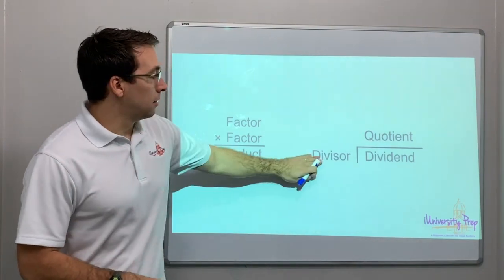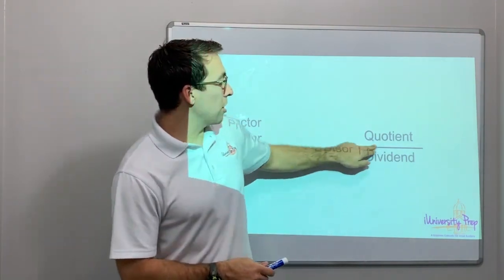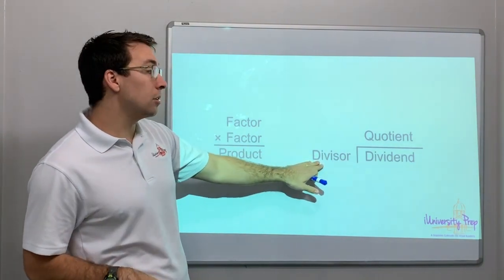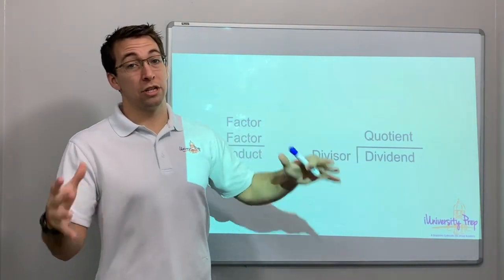And what does that look like here? So this is what I call the house. The dividend is under the house. It gets divided up by the divisor. And that gives you the quotient, which is your answer.